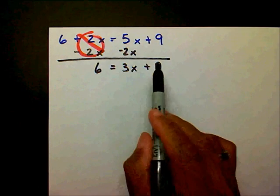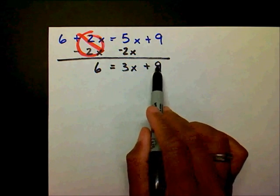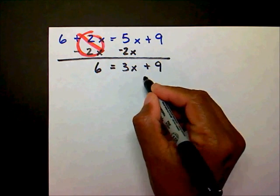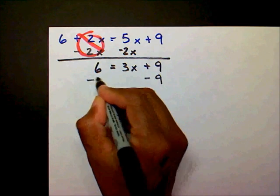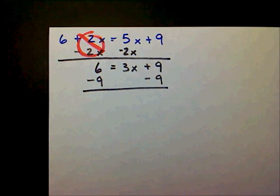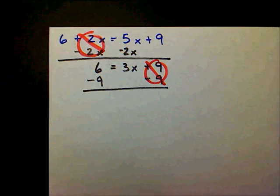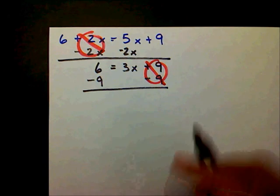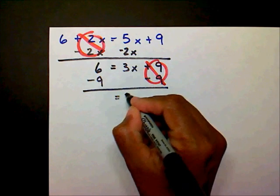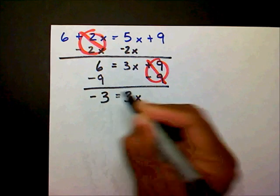Since my x's are on the right-hand side, I want to move the constant term to the left. So in order to get rid of the plus 9, I'm going to subtract 9 on both sides. This creates a zero pair — the plus 9 and minus 9 cancel. That leaves me with 3x on the right and negative 3 on the left.